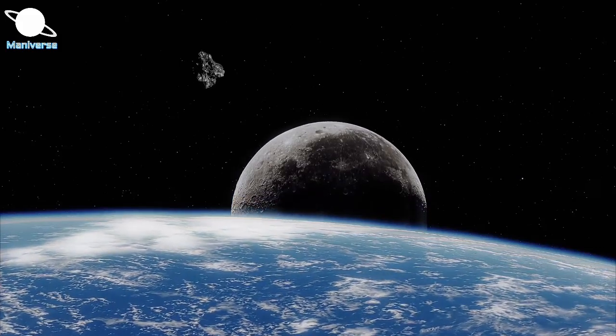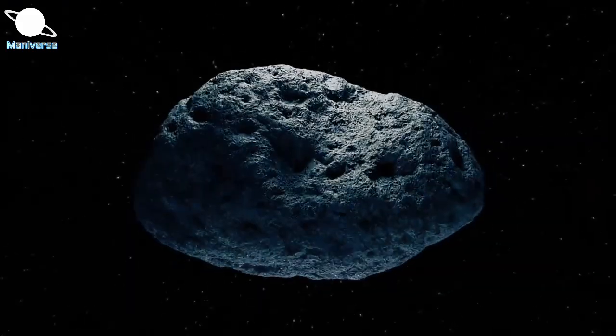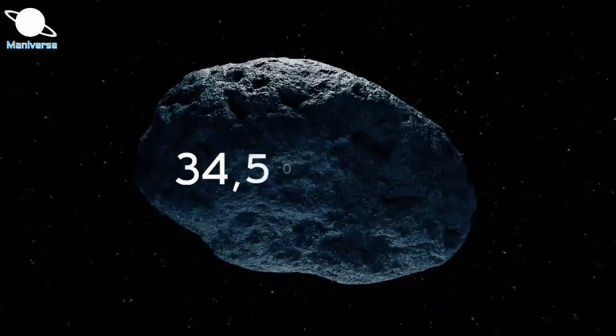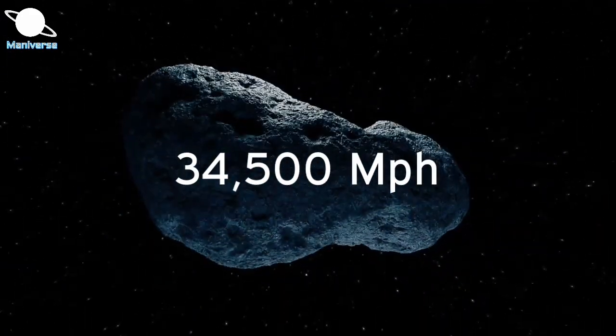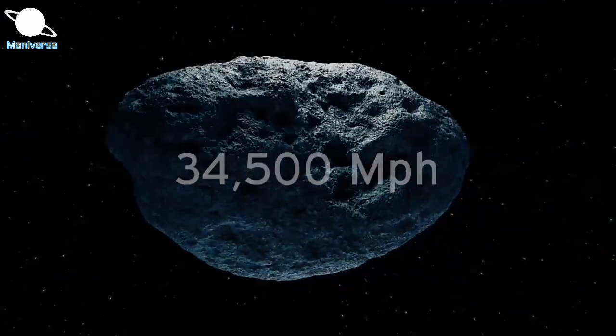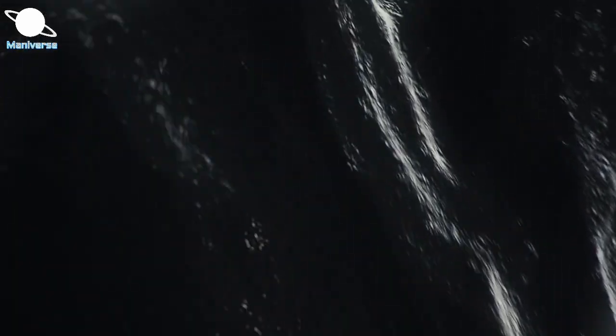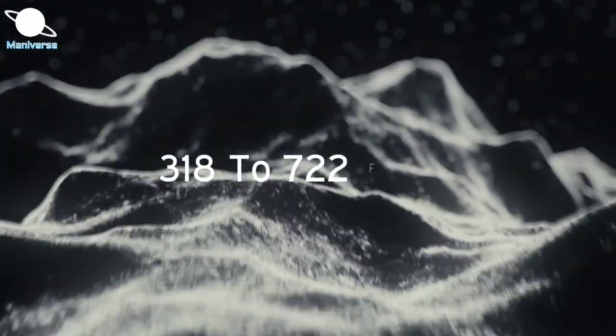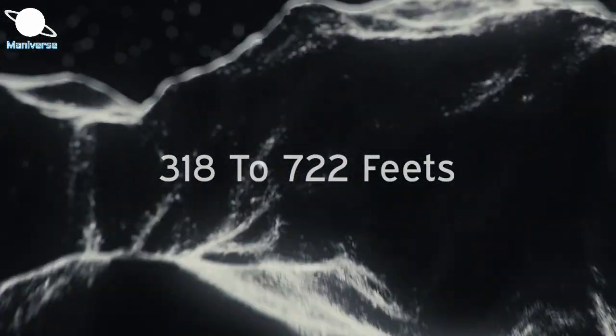At the time of its close approach, the asteroid will be travelling at an incredible speed of roughly 34,500 miles per hour. This is about 17 times faster than a rifle bullet. Based on its observable magnitude in the sky, the size of this space rock is estimated to be anywhere from around 318 feet to 722 feet across.